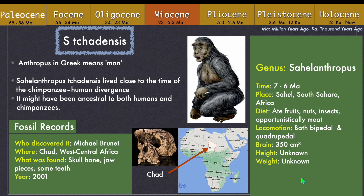In the year 2001, Michael Brunet discovered skull bone, jaw pieces and some teeth near the Sahel region in Chad, Africa. These fossils had many differences from the Ororin, Ardipithecus and Australopithecus genera, and hence were classified into a separate genus named Sahelanthropus. "Anthropus" means man in Greek. Since the fossils were discovered in the Sahel region of Chad, the full name of the species is Sahelanthropus chadensis.